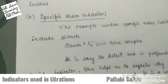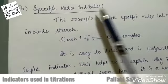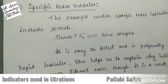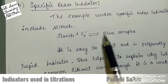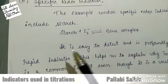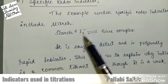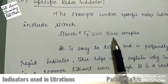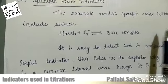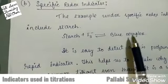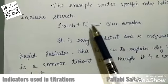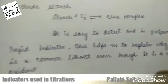Next is the specific redox indicator. One example is starch: starch reacts with I₃⁻ (iodine) to give a blue complex. This is a special type of indicator where iodine is the oxidant and it will form a complex that has a different color. Starch reacts with iodine to give a blue complex, and when it is reduced it gives a different color. So it is a specific redox indicator.